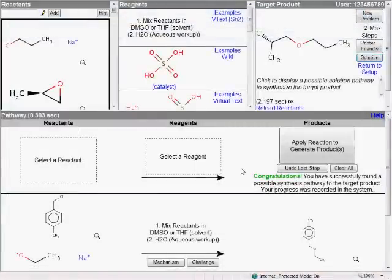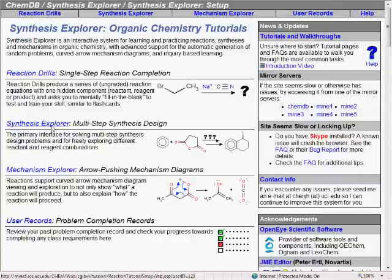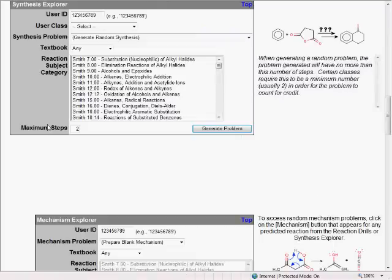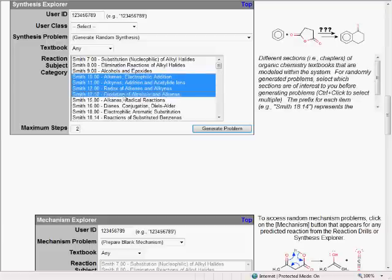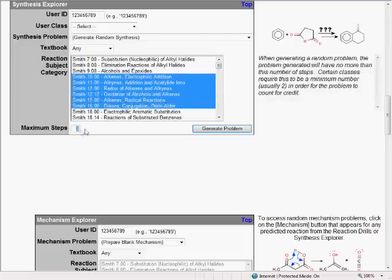When you want to work on something else, click on the Return to Setup link to get back to the initial setup page, and from here, you can prepare another synthesis problem based on different chapters of material. In fact, you can even select combinations of multiple chapters and problems of greater length to generate even more difficult problems that will really challenge your knowledge and better represent the difficulty of real exam problems.